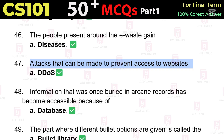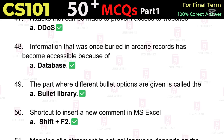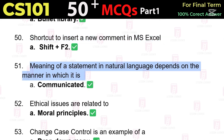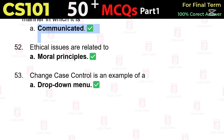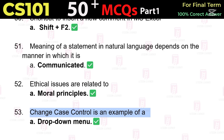Attacks that can be made to prevent access to websites are DDoS attacks. Information that was once buried in arcane records has become accessible because of databases. The part where different bullet options are given is called the bullet library. The shortcut to insert a new comment in MS Excel is SHIFT+F2. The meaning of a statement in natural language depends on the manner in which it is communicated. Ethical issues are related to moral principles. Change Case control is an example of a drop-down menu.